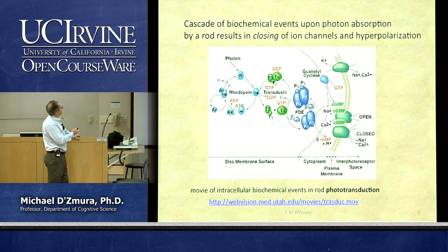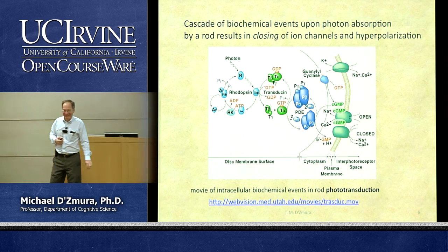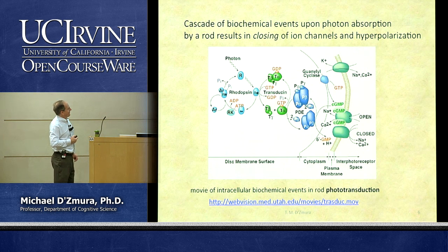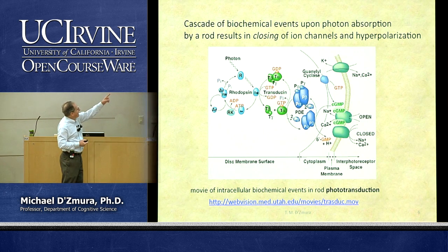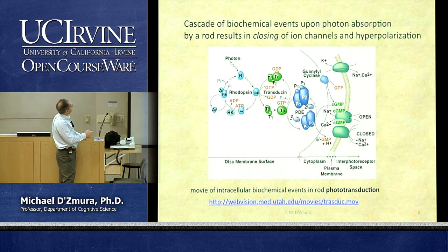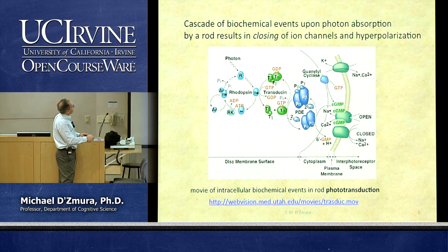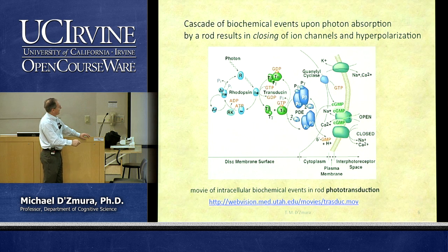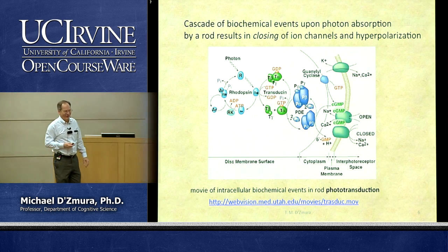What are these events? There's a complicated diagram, but basically: a photon is absorbed by a rhodopsin molecule, triggering biochemistry that impacts GTP, which affects phosphodiesterase enzyme molecules, which in turn affects cyclic GMP and GTP, which in turn affects ion channels in the cell membrane. Ion channels in the cell membrane cause changes in polarization.